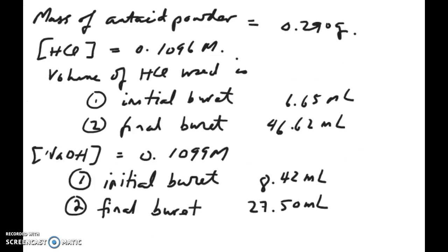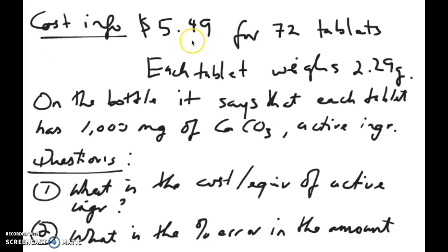Now I want you to work through the problem shown here. It's basically the same type of calculation — the data looks slightly different because this is actually how you're going to collect the data, so you have to calculate the volume by subtracting the burette final minus initial. But aside from that, everything else is identical to what we just did. The cost information is also given: $5.49 for 72 tablets, each tablet weighs 2.29 grams. Answer the question: what is the cost per equivalent of active ingredient for this particular antacid?